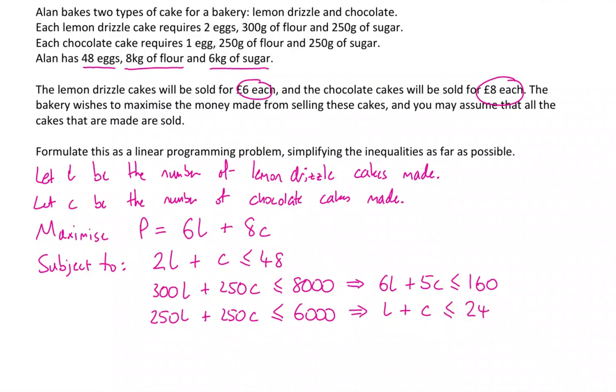So we now have those inequalities: one for eggs, one for flour, and one for sugar. Now the only thing we're missing here are the non-negativity constraints. We can't have a negative number of lemon drizzle cakes, so l has got to be greater than or equal to zero. And the number of chocolate cakes has got to be greater than or equal to zero. So don't forget your non-negativity at the end.